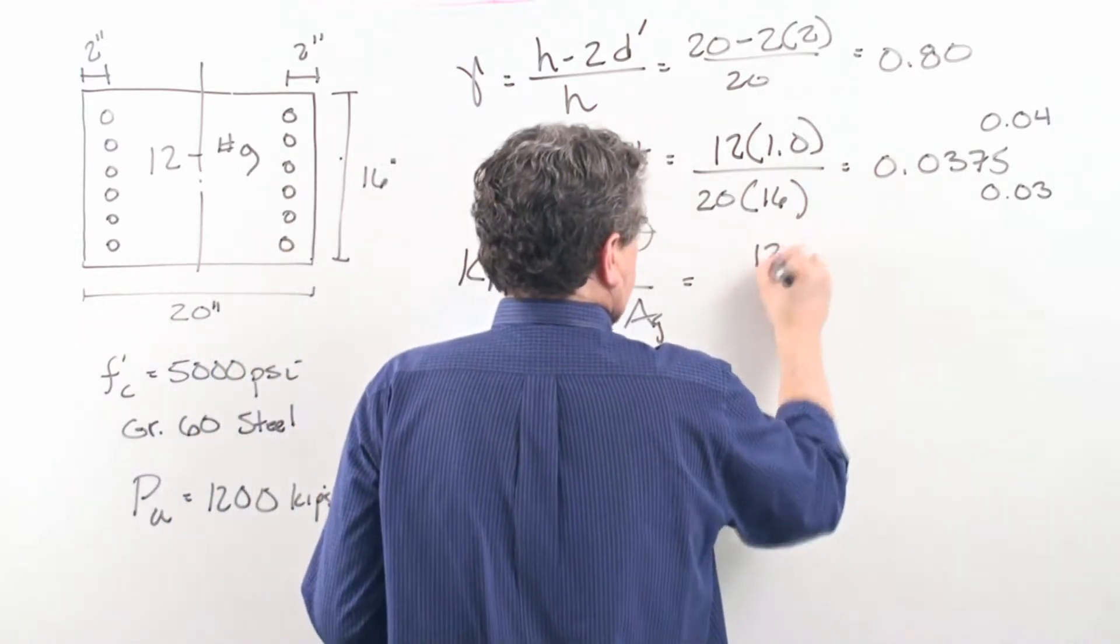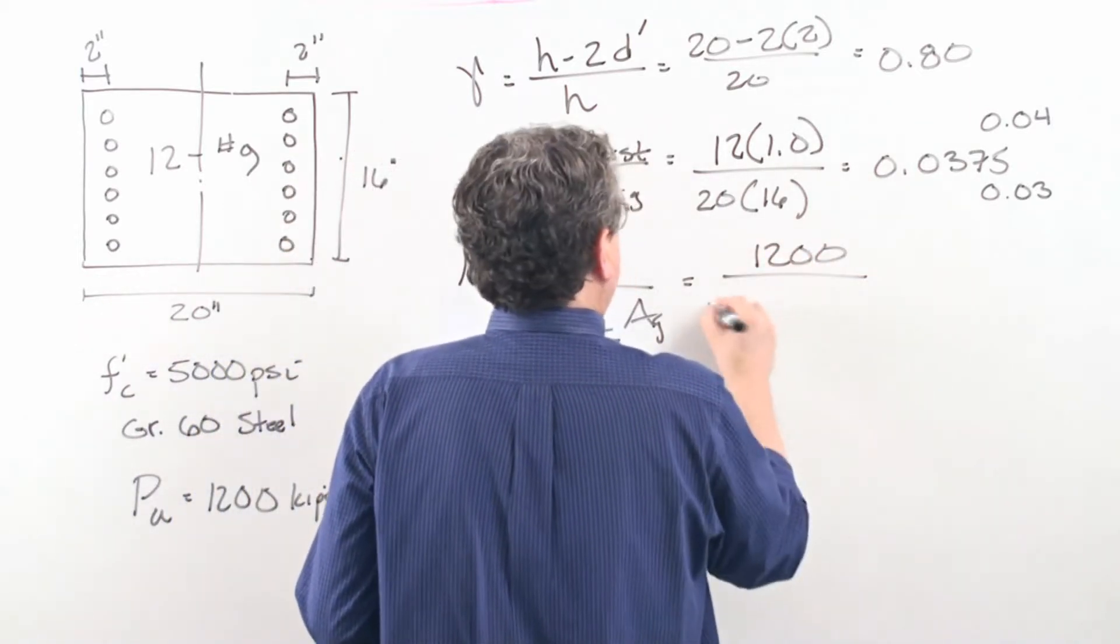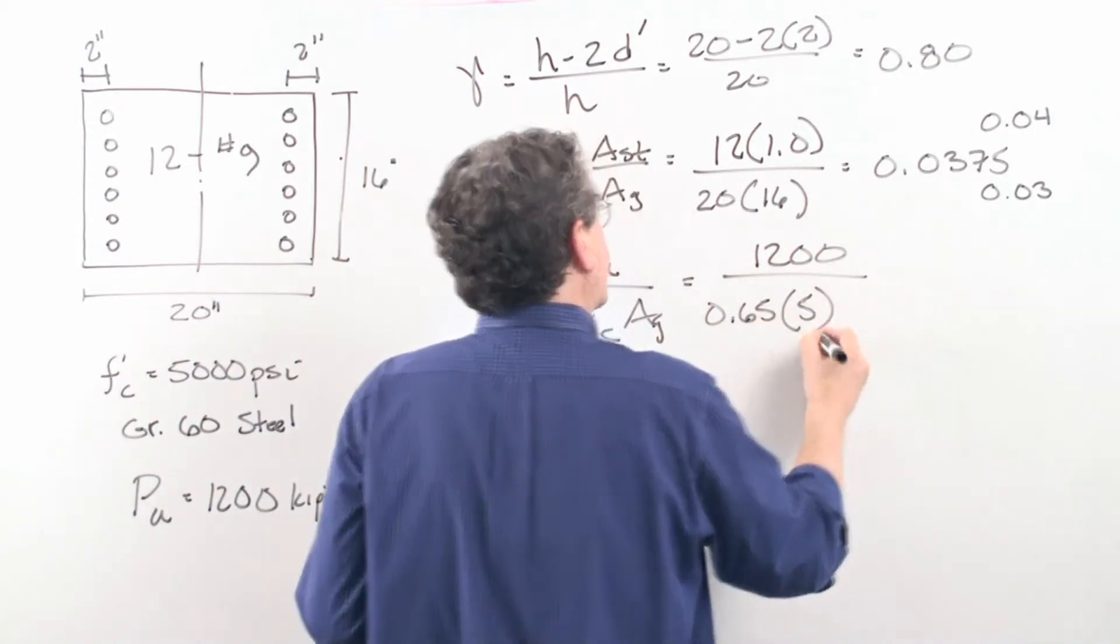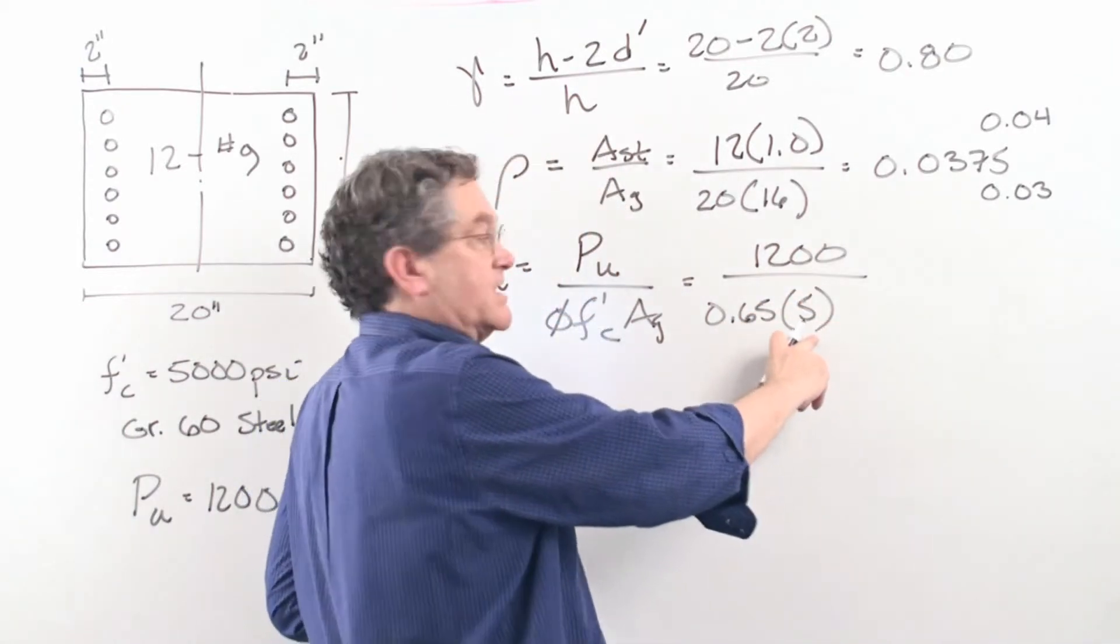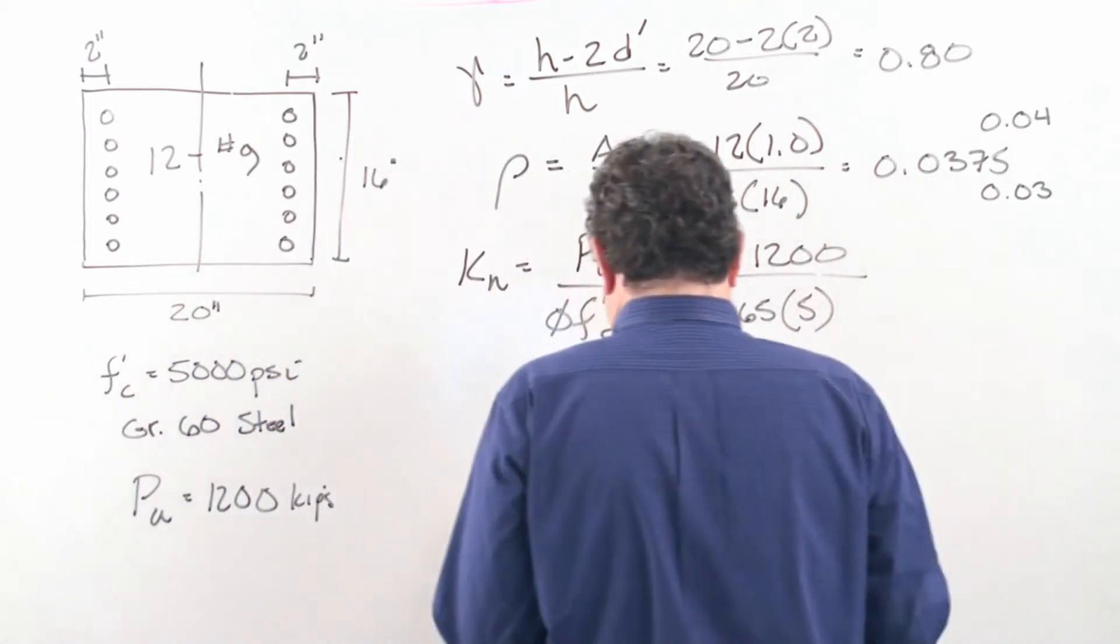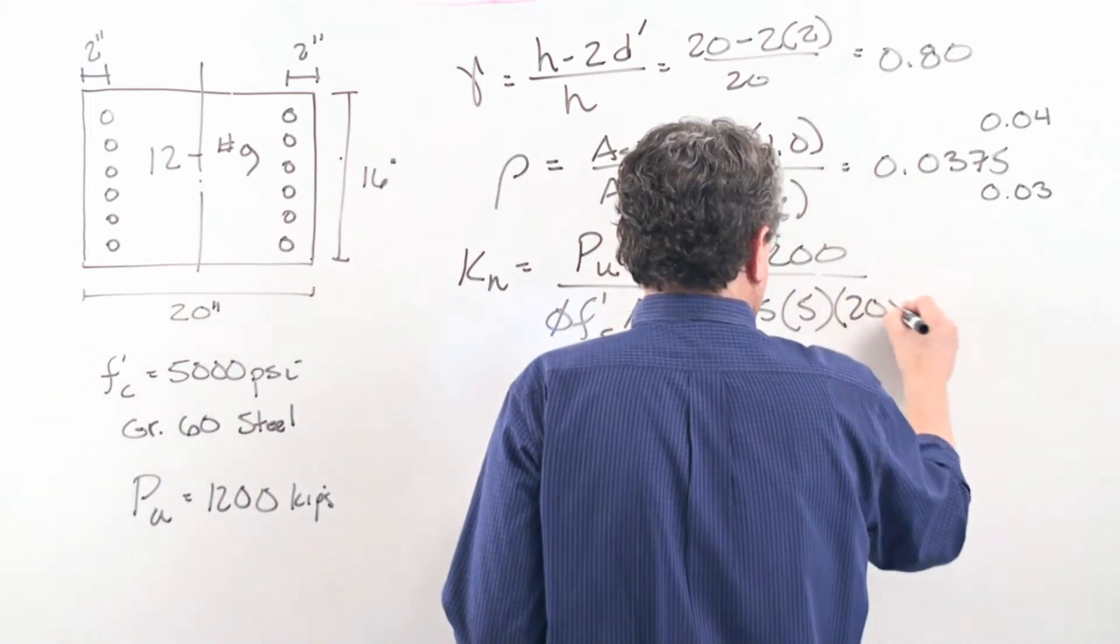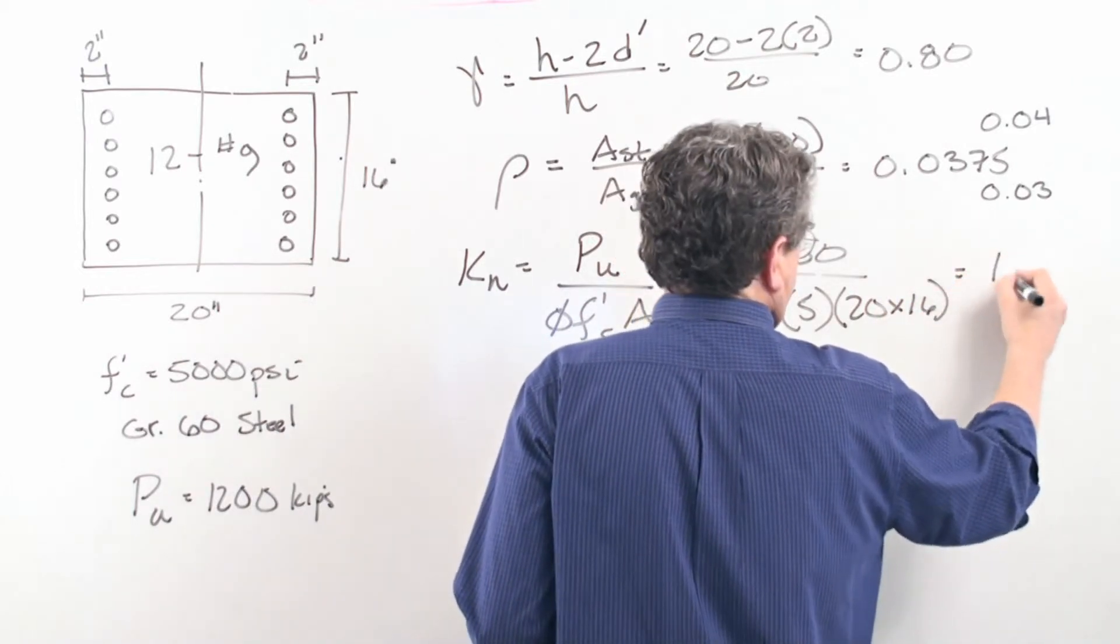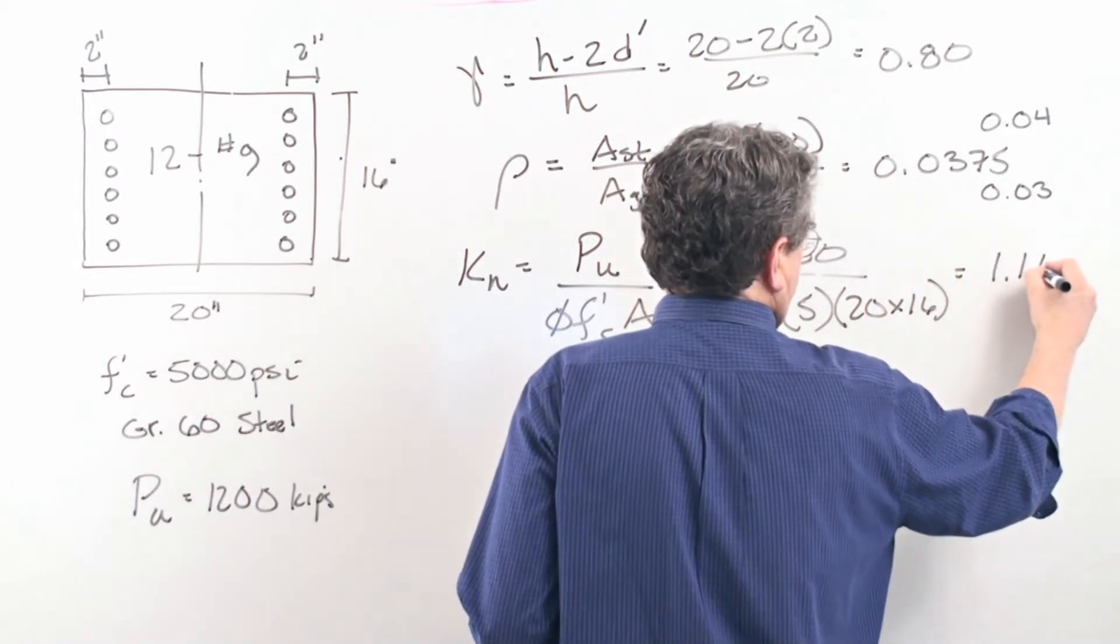So plugging things in, we've got the 0.65 for the phi, 5 KSI - note it goes in in KSI because our load is in kips - and then our area would be the 20 by the 16, and that comes out to be 1.15.